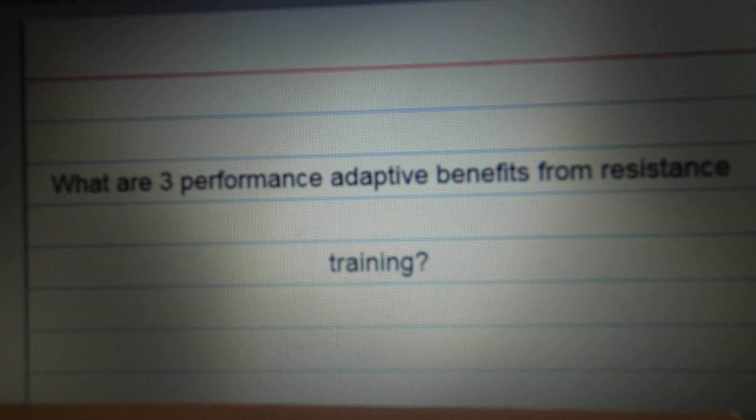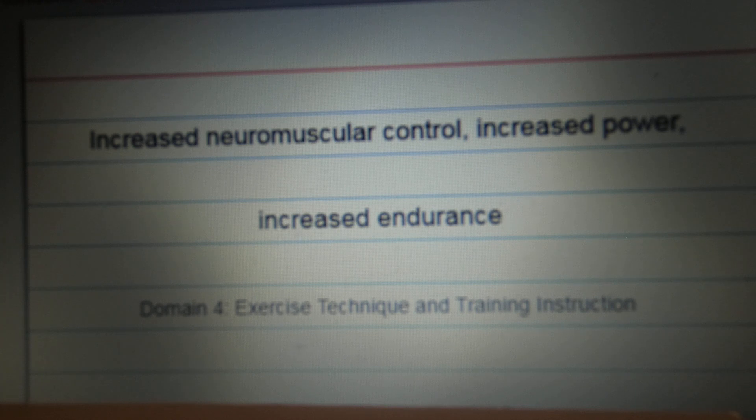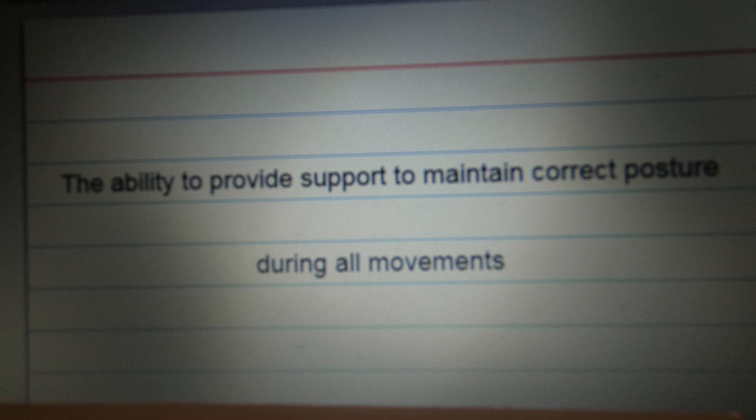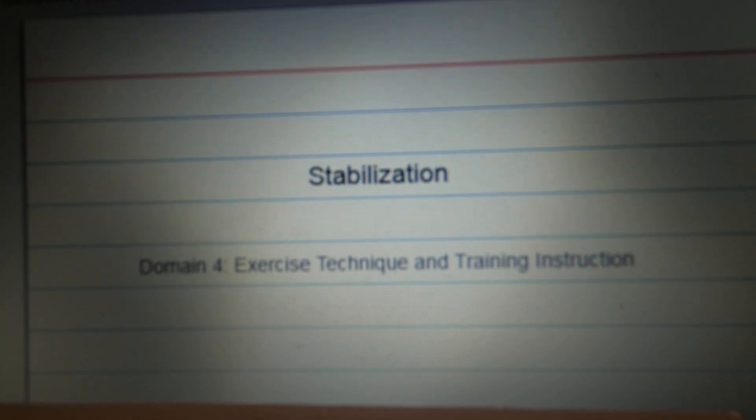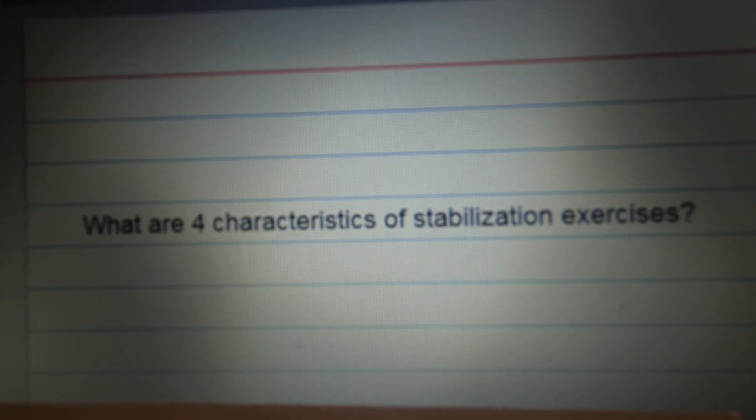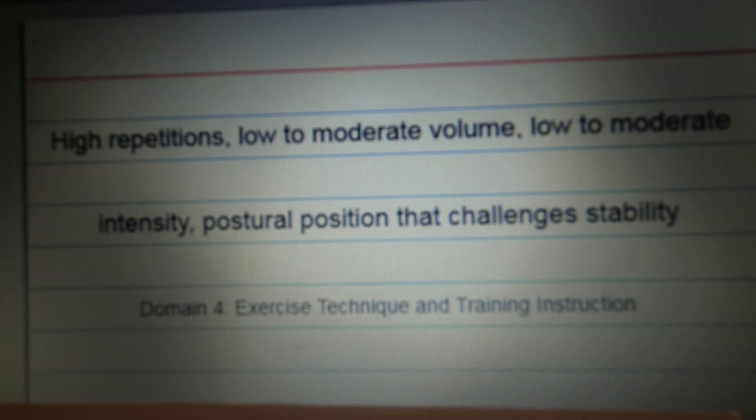What are three performance adaptive benefits from resistance training? Increased neuromuscular control. Increased power. Increased endurance. The ability to provide support to maintain correct posture during all movements. Stabilization. What are four characteristics of stabilization exercises? High repetitions. Low to moderate volume. Low to moderate intensity. Postural position that challenges stability.